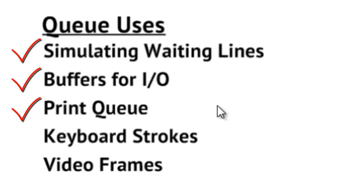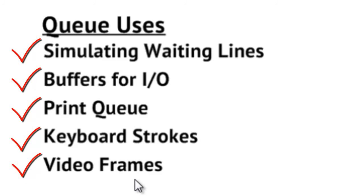The same idea applies to frames in a video as well. That pretty much covers everything for this queue data structure from a conceptual standpoint. Hopefully you understand the basic operations: enqueue, dequeue, the front of the queue, the back or tail of the queue, and the head of the queue, and you have some sense of how the queue is used. That's it for this video.